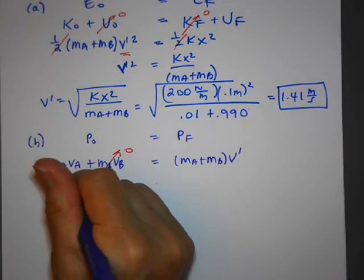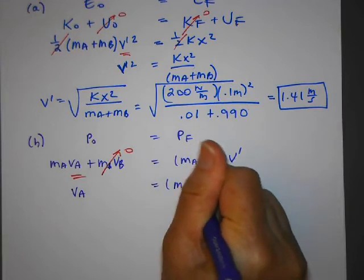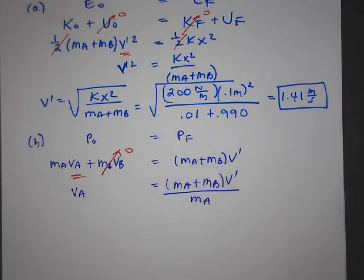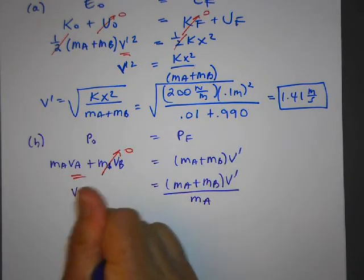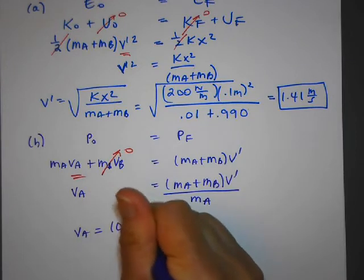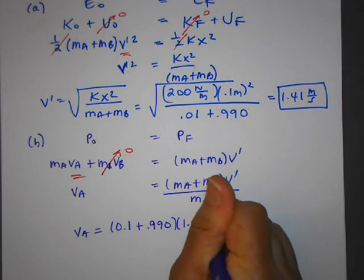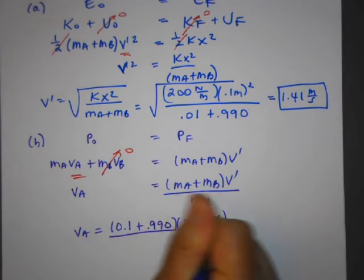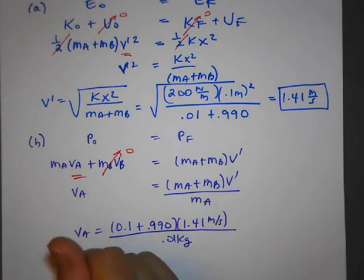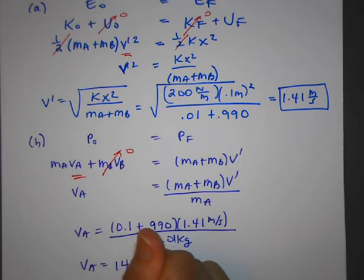So I'm going to have va is equal to ma plus mb times v prime over ma. Okay, so now I'll substitute in, and I'll have 0.1 plus 0.990 times 1.41 divided by 0.01 kilograms. And when I put all that in my calculator, it comes out to be 141 meters per second.